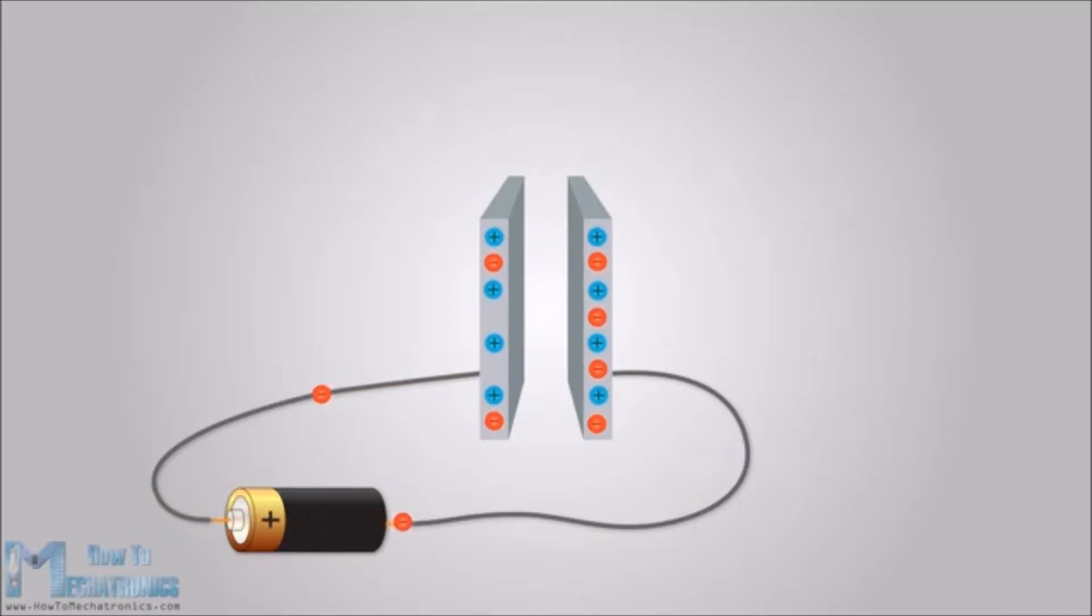Electrons and protons separate, which cause a positively charged plate and a negatively charged plate, and which causes the charge in the capacitor to hold. Whenever you discharge the capacitor, they combine out into what we know as electricity.